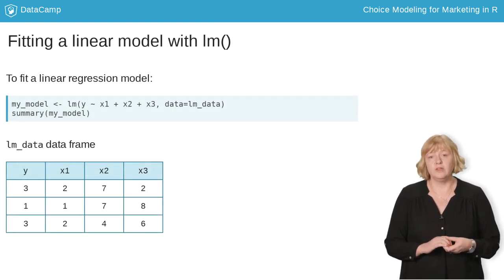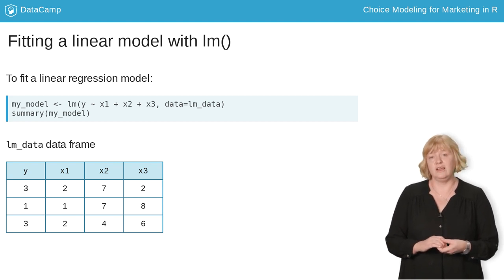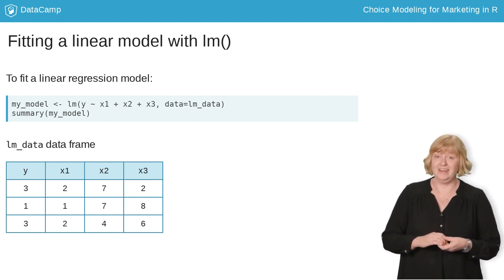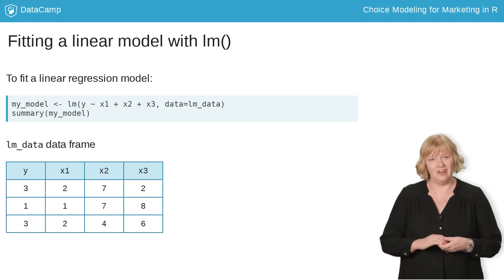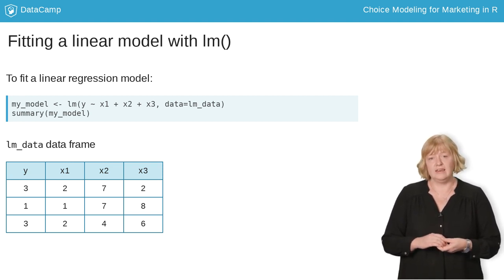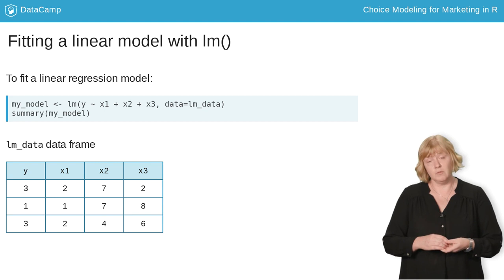To fit a linear regression model, we use the function lm. When we type this command, we're telling R to fit a model to predict y as a function of x1, x2, and x3 using the data in the myData data frame. If myData doesn't include columns named y, x1, x2, and x3, you'll get an error. We usually take the output of lm and assign it to a model object that we can use later — here we're assigning it to myModel. Once we have the myModel object, we can see a summary of the model by typing summary of myModel.